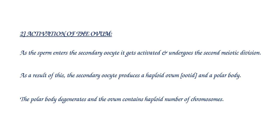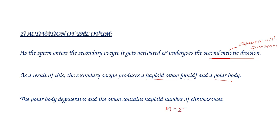In the process of fertilization, activation of the ovum occurs. As the sperm enters the secondary oocyte, it undergoes the second meiotic division, also called equational division. As a result, the secondary oocyte produces a haploid ovum, also called ootid, and a polar body. The polar body degenerates, and the ovum contains a haploid number of chromosomes — 1N condition — consisting of 23 chromosomes.